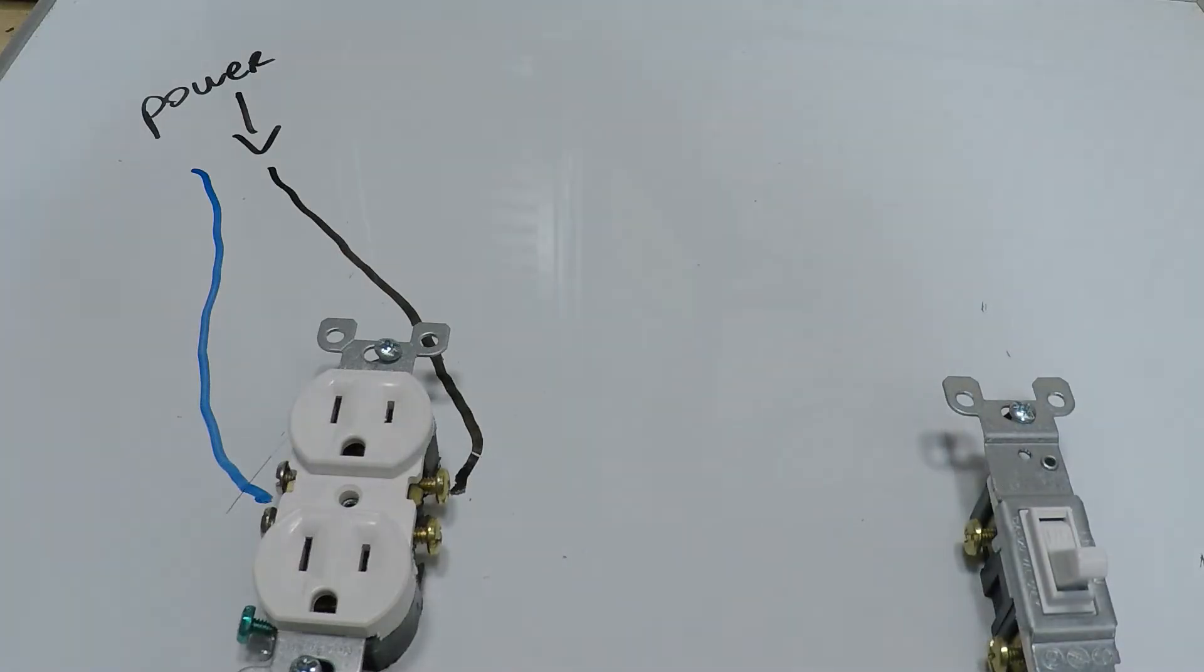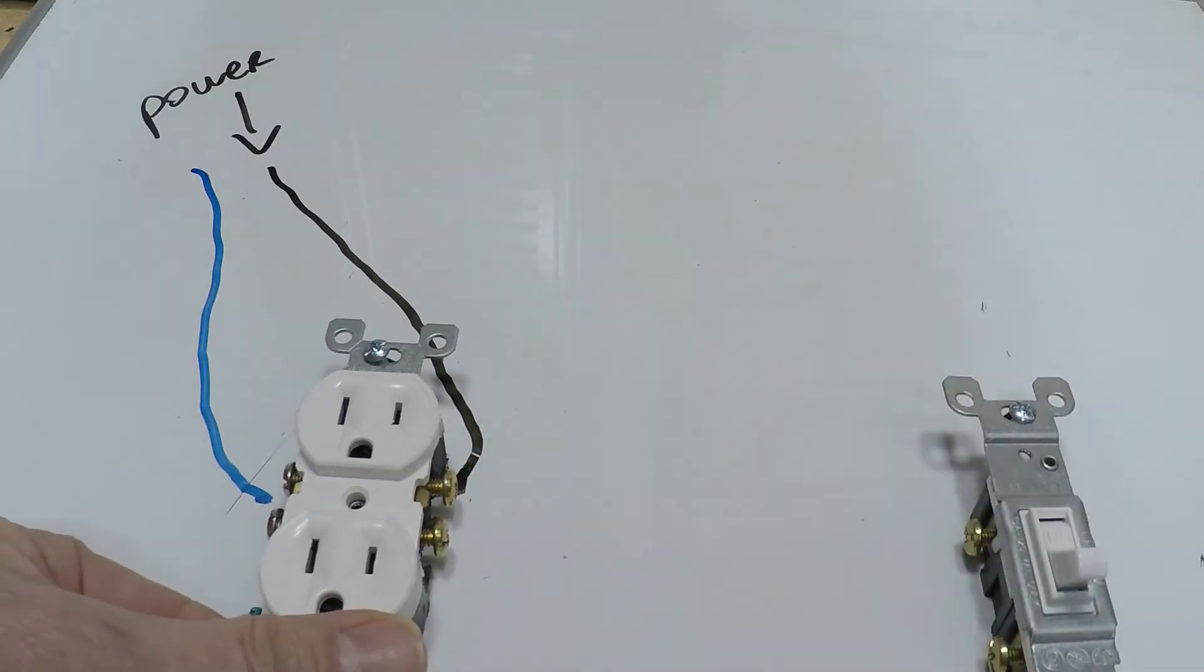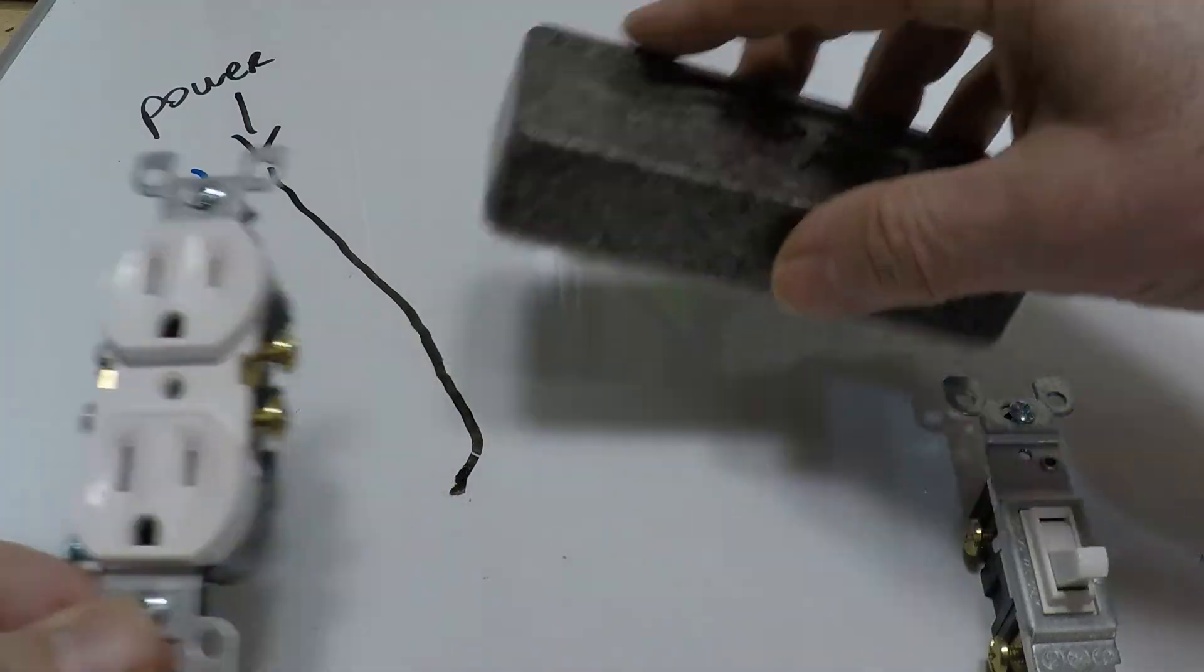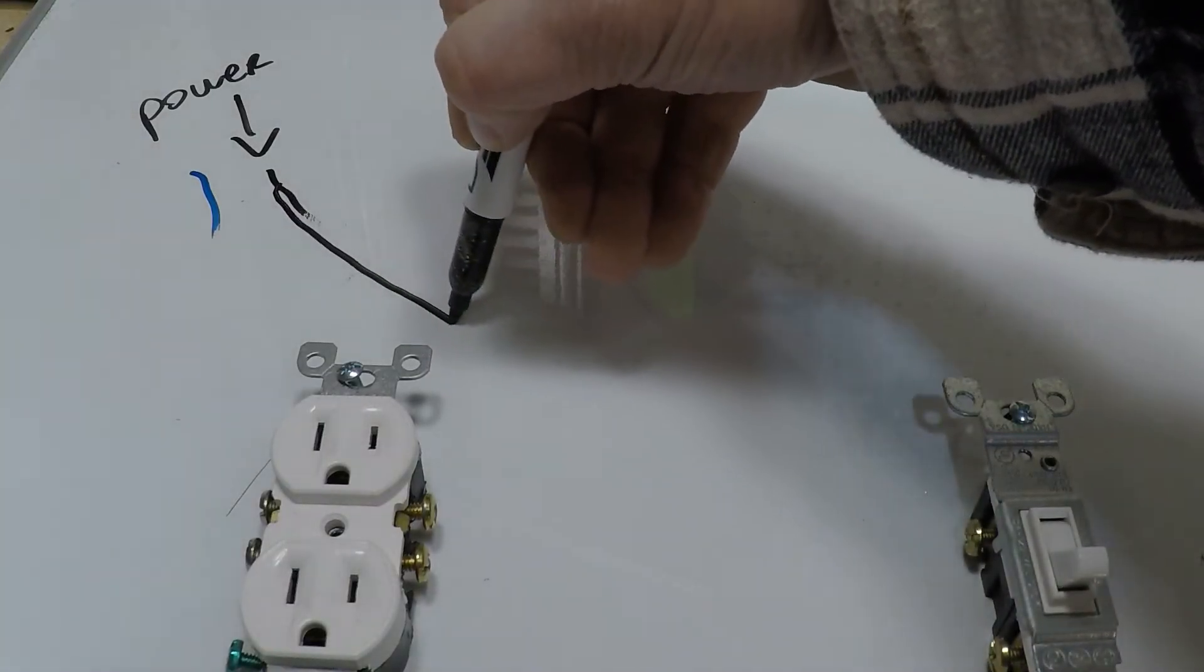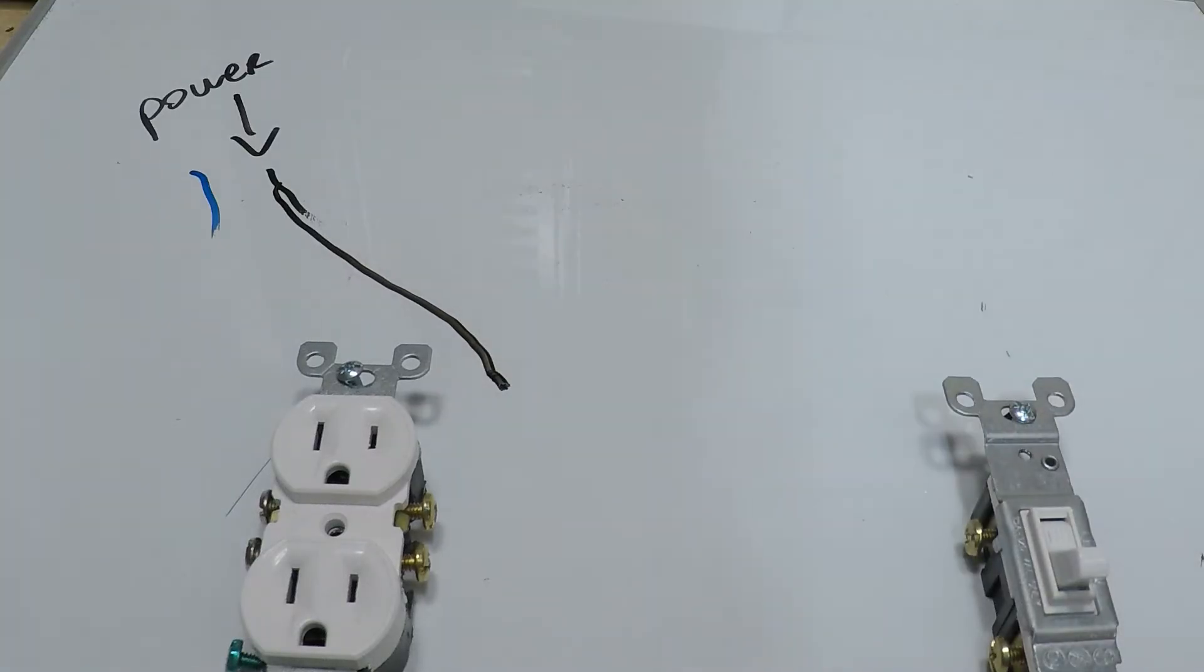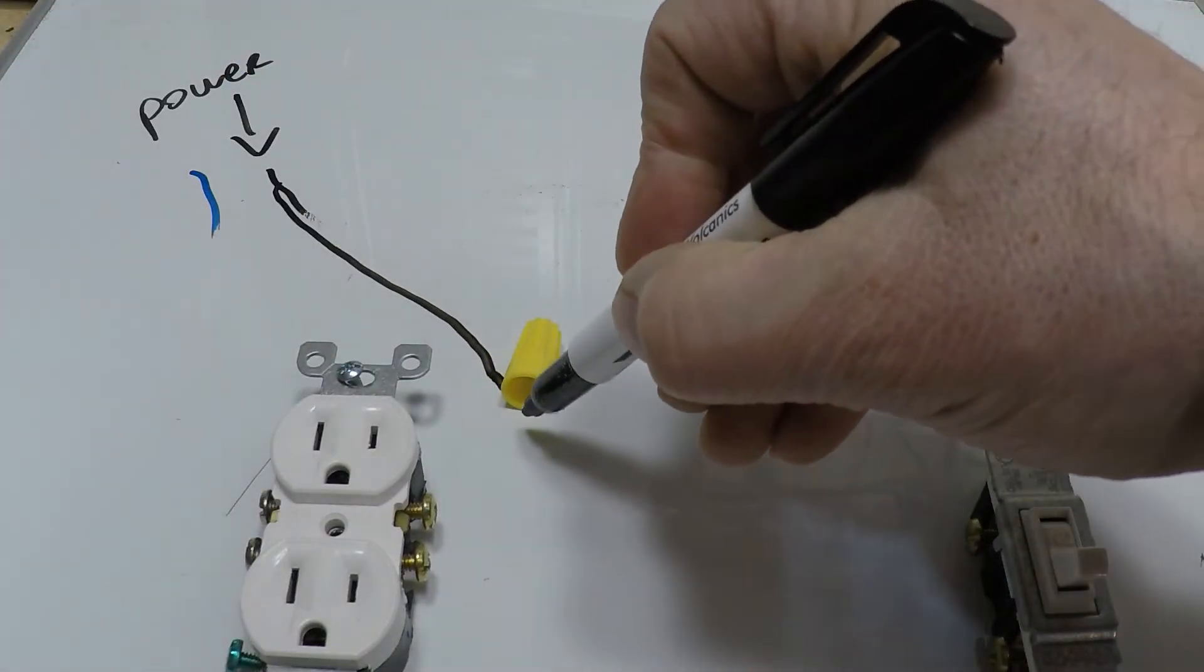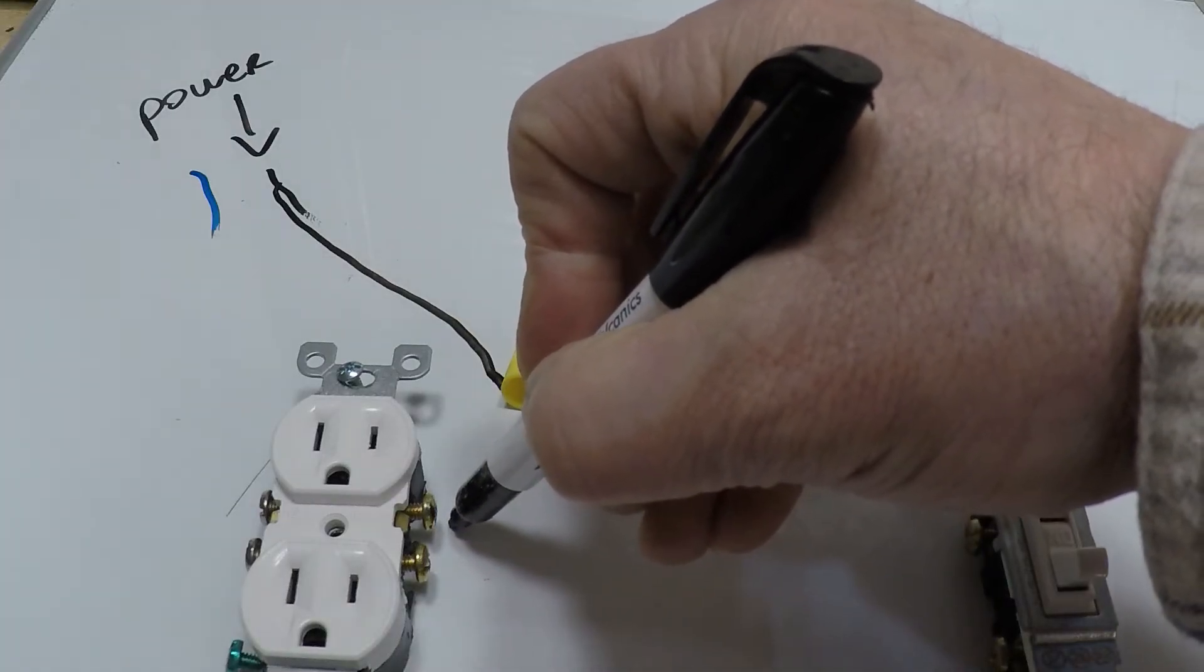Now the way this thing works with a light switch is, if you wanted to control this portion of the outlet with the light switch, here's what you would need to do. I'm going to erase what I just did here. So you'd bring your hot in to the box and you'd have a wire nut, and then from there you would have one going here to this hot lead.